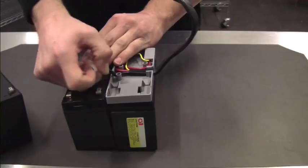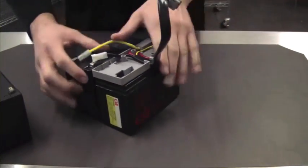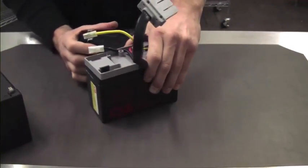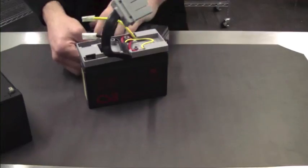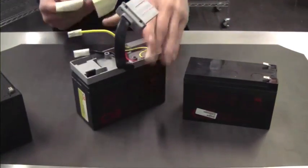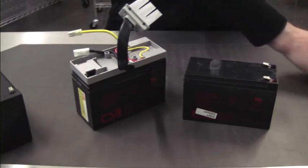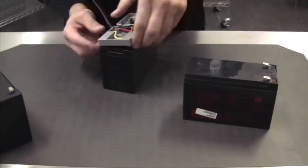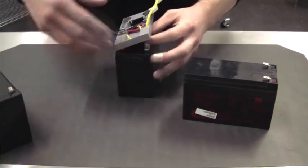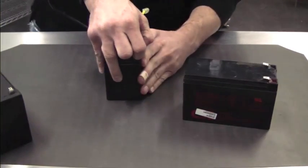Now that you have the battery unwired, use it to pry away the sticker from the second battery, and then remove the sticker from the other battery as well. Once you've done that, begin removing the wiring from the second battery, once again paying attention to the wiring.